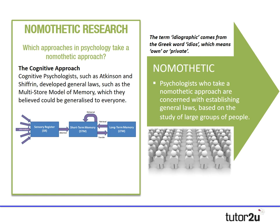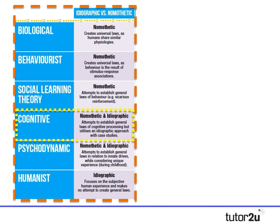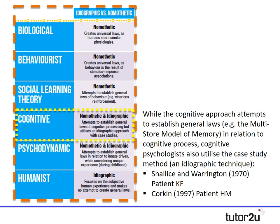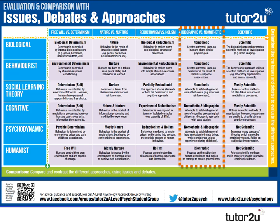What's particularly interesting, and the reason that the ideographic and nomothetic approach is a debate, is that while the cognitive approach generally takes a nomothetic approach, it doesn't always, as we've illustrated. Although the cognitive approach tries to establish general laws like the multi-store model in relation to memory, they also use ideographic pieces of research — the case study by Shallice and Warrington, or patient HM by Corkin. They actually borrow aspects of the ideographic approach to provide evidence for and against different theories. What's really key is that although we can consider whether approaches are generally nomothetic or ideographic, many actually adopt elements of both — and that's what makes this quite an interesting debate in psychology.